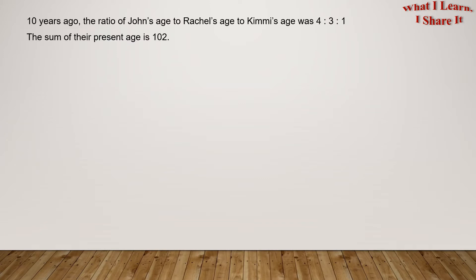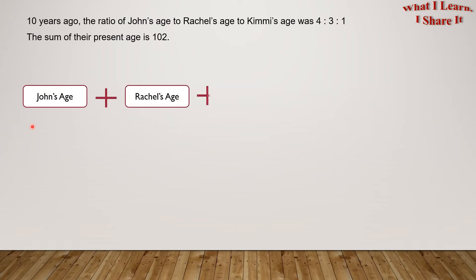Ten years ago, the ratio of John's age to Rachel's age to Kimmy's age was 4 to 3 to 1. The sum of their present ages is 102. This means John's age plus Rachel's age plus Kimmy's age equals 102.